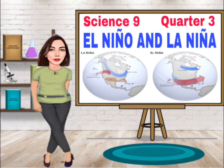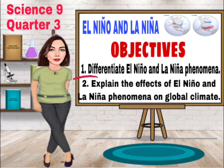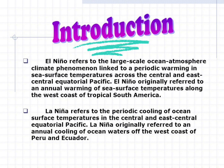Science 9, Quarter 3 — Topic: El Niño and La Niña. Objectives: (1) Differentiate El Niño and La Niña phenomena; (2) explain the effects of El Niño and La Niña on global climate. Introduction: El Niño refers to the large-scale ocean-atmosphere climate phenomenon linked to a periodic warming in sea surface temperatures across the central and east-central equatorial Pacific.